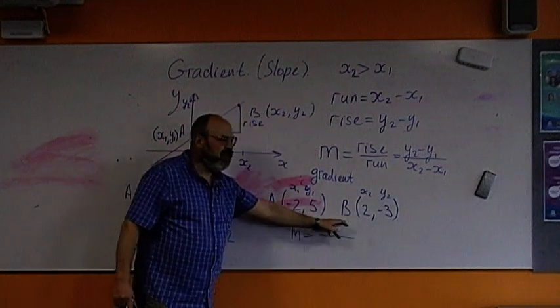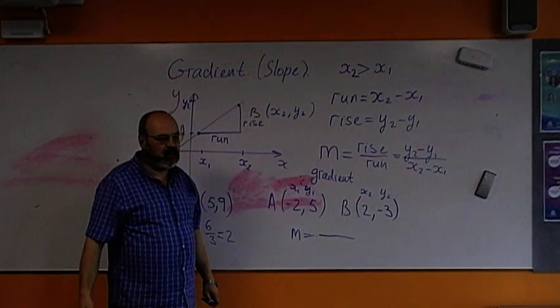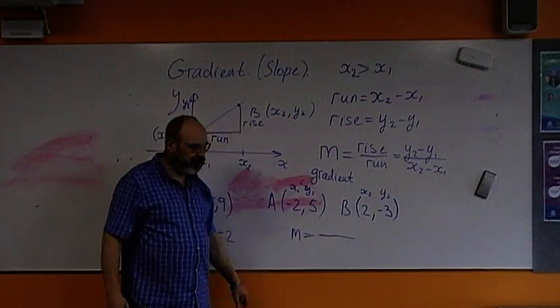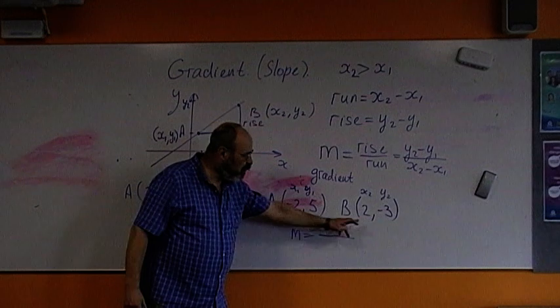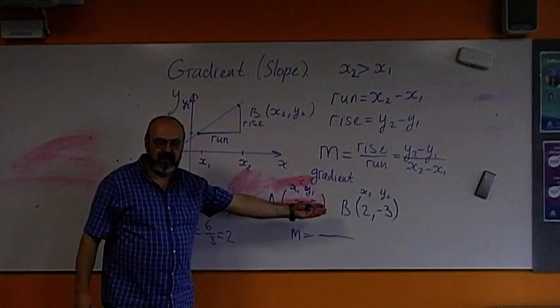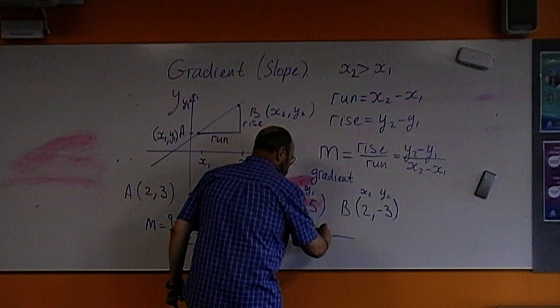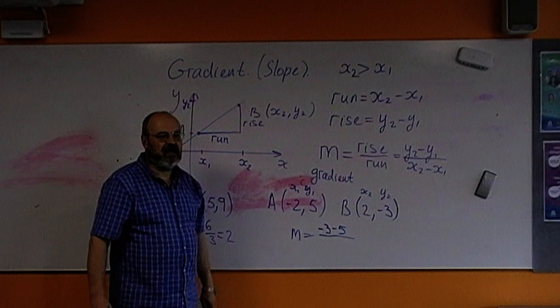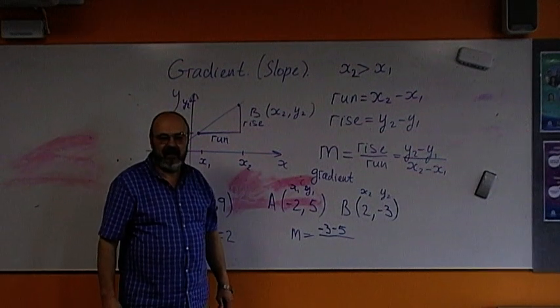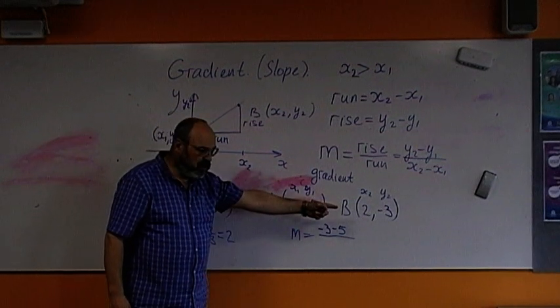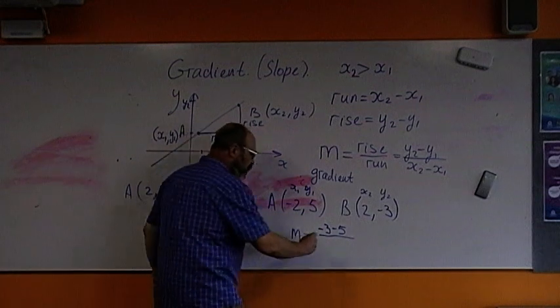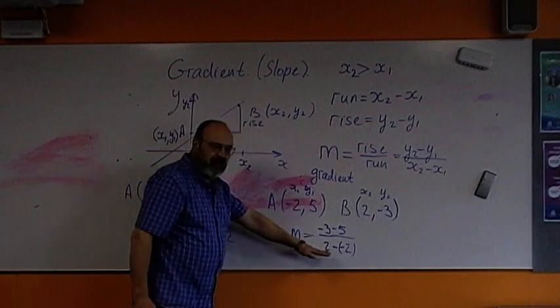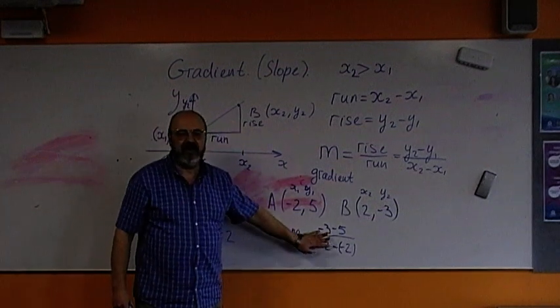What will be in the numerator? We need to write rise y2 minus y1. So, what I should write here? Negative three minus five. Yes, that's correct. What will write here as a run? X2 minus x1. Two minus negative two. Make sense why I write it exactly like this? We have y2 minus y1.